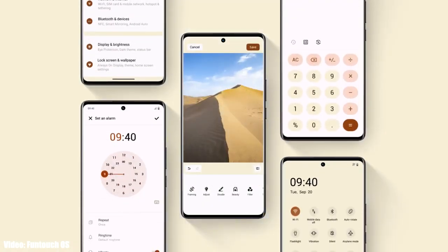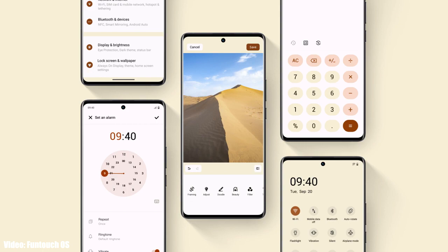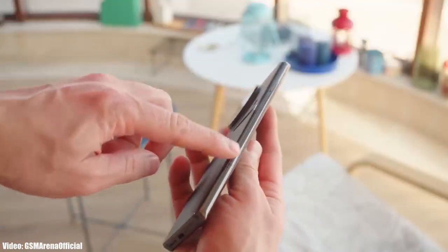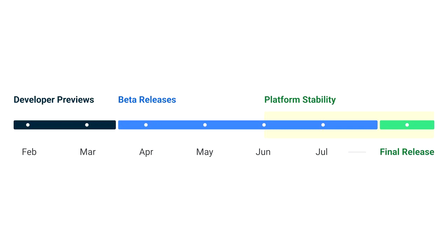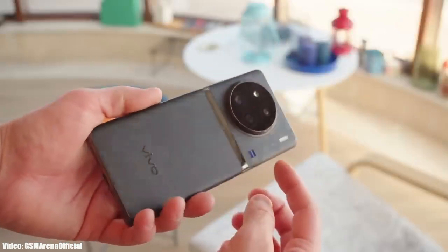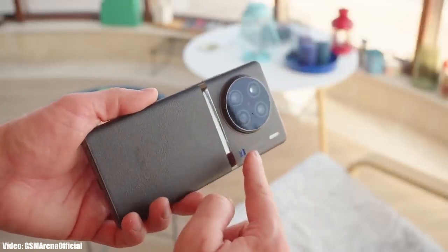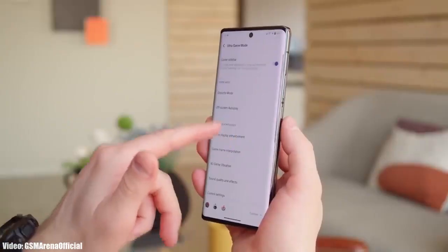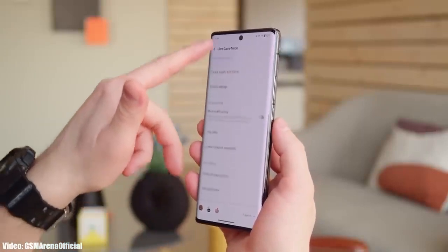As we get closer to the release date, more information and features related to FuntouchOS 14 will be revealed. Google will release the official Android 14 update in August or September, and after that Vivo will start rolling out the update to eligible smartphones. Usually Vivo releases their Android update roadmap in September or October, which is when you'll get information about the official release date for your Vivo smartphone.